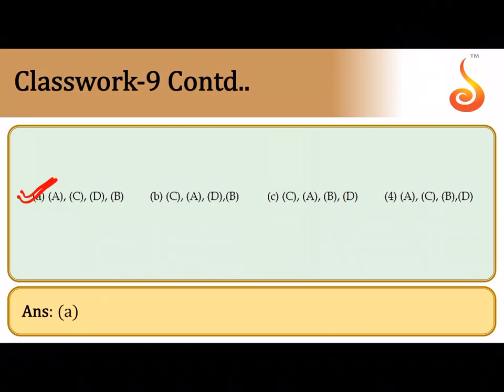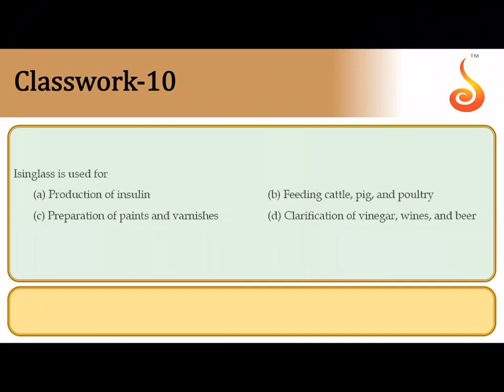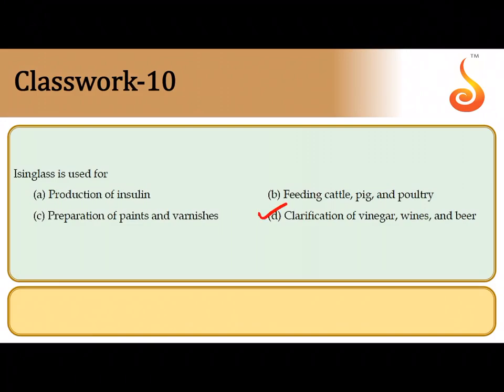The tenth question: isinglass is extracted from the air bladder of fishes. It is used in the clarification of vinegar, wines, and beer. So option D is the correct answer.